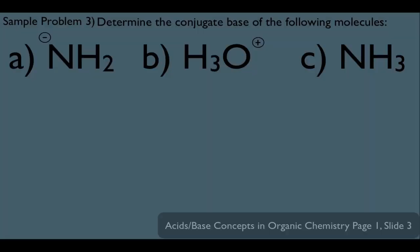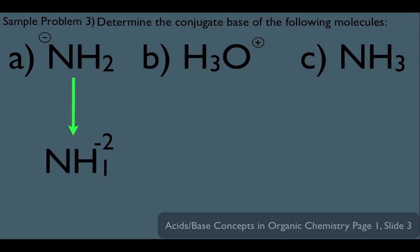Let's look at another sample problem. This time, let's determine the conjugate base of the following molecules. Looking at A, NH2-: determining the conjugate base means we subtract a hydrogen and a plus one. Overall, this would be NH with a negative two overall charge.